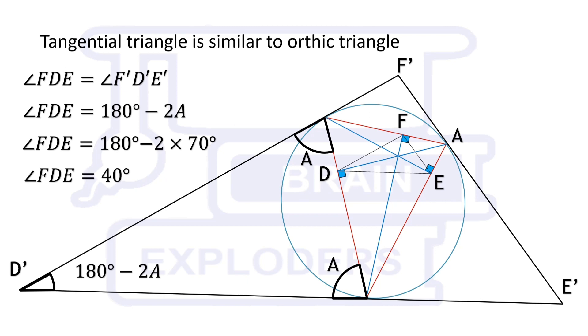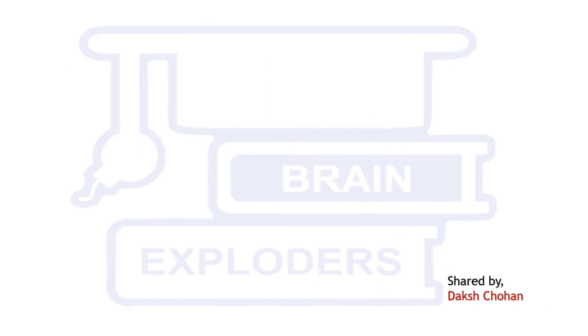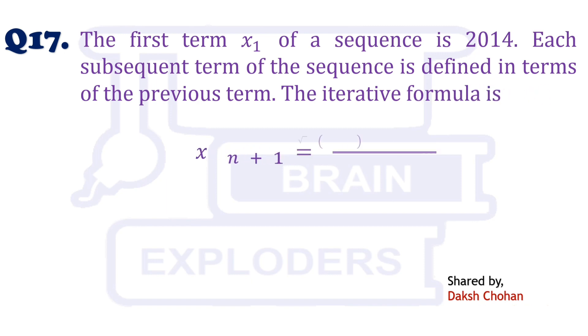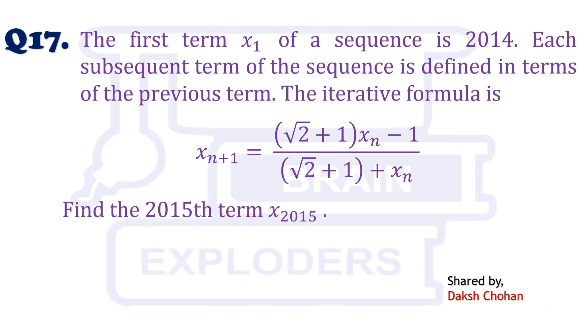Let's move to another question. The first term x1 of a sequence is 2014. Each subsequent term of the sequence is defined in terms of the previous term. The iterative formula is given below. Find the 2015th term. This question was asked in British Math Olympiad in 2015.